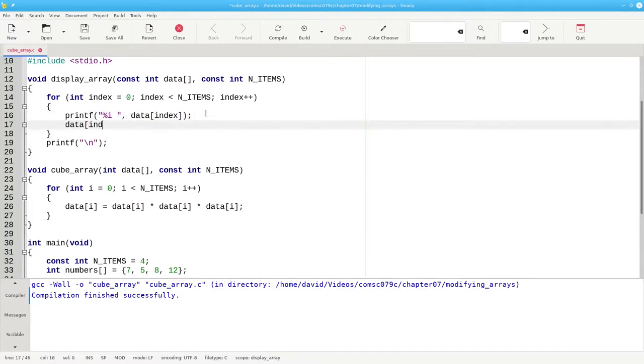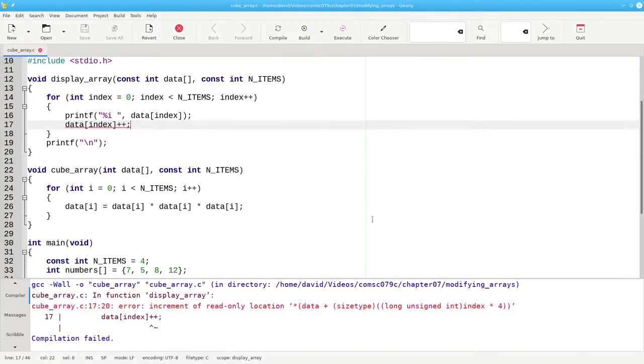If I were to accidentally do something like this, to try and increment the values of the array, and then try to build the program, the compiler would tell me I can't do that, and it would give me an error.